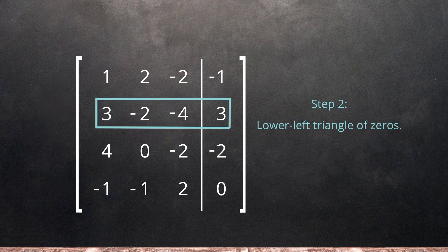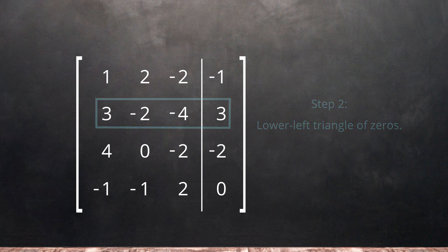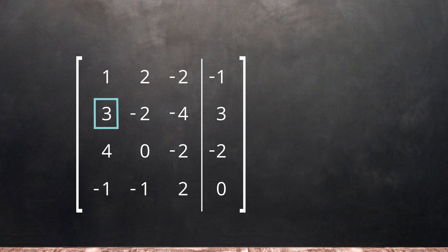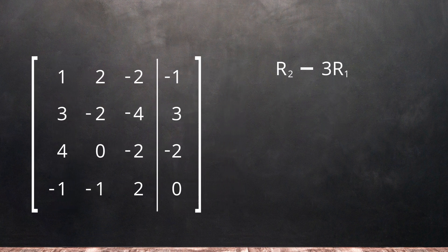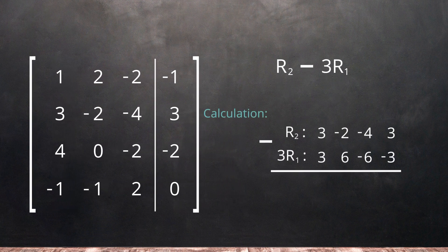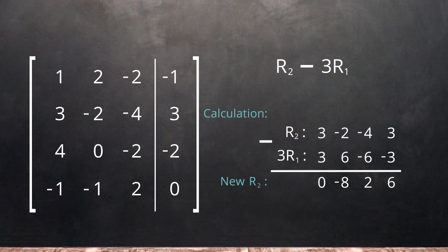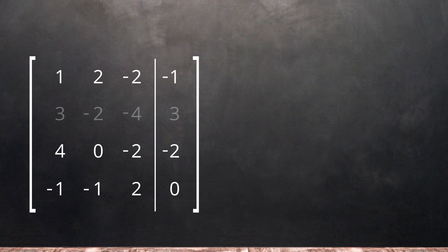Let's start to manipulate the second row. We want to change that leading 3 into a 0 using the first row as our pivot. If we multiply the first row by 3 and subtract it from the second row, this will give us the 0 we want. Performing the calculation, our new row 2 will have a 0 where we want it, and we can rewrite our matrix.